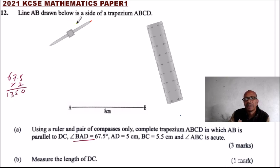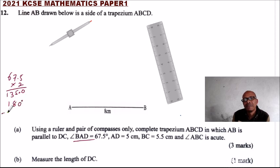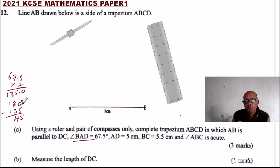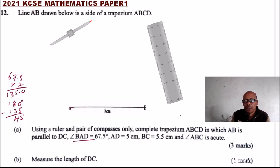The angle is 135 degrees. If we subtract 135 from 180 degrees, we get 45 degrees, meaning that to construct this angle we can construct an angle of 45 degrees.